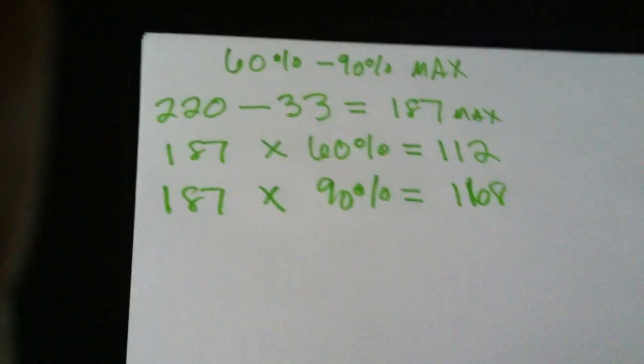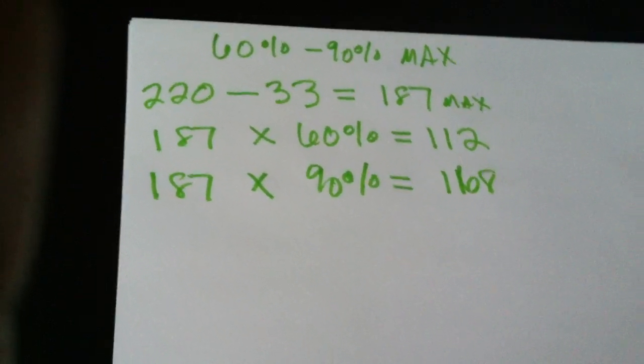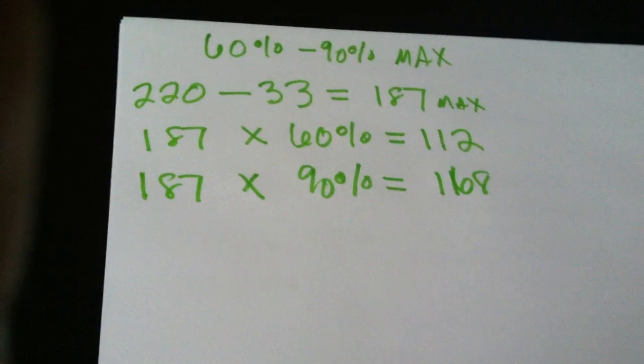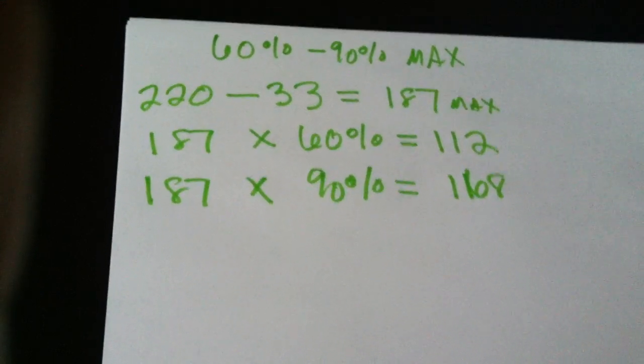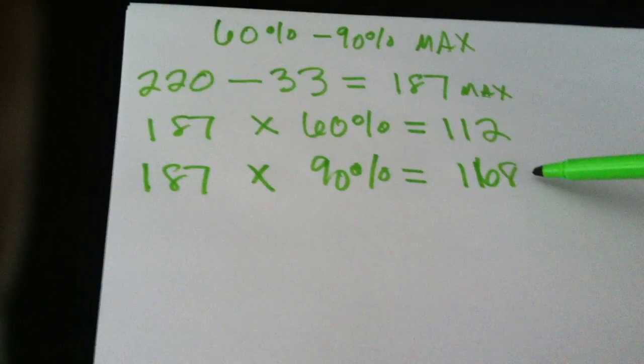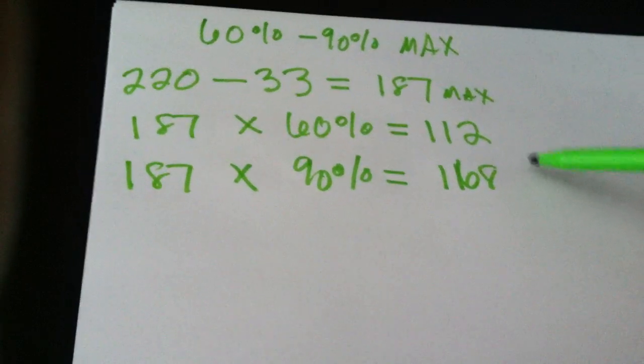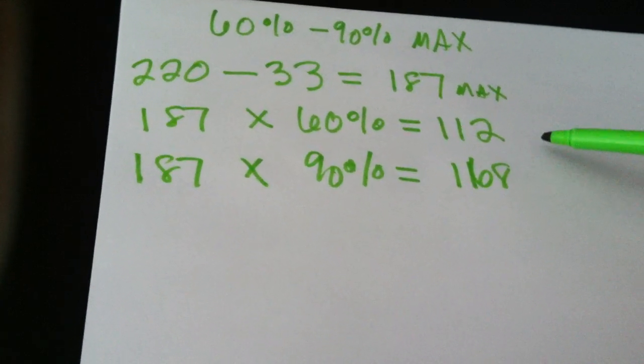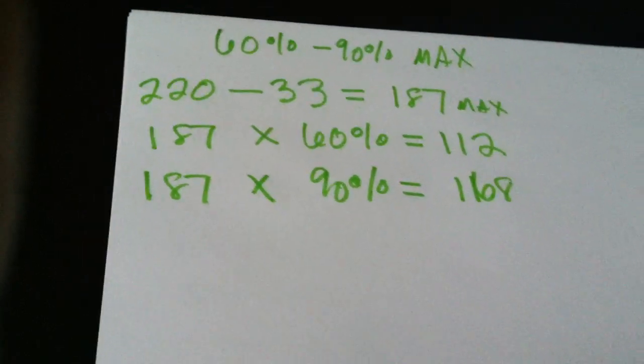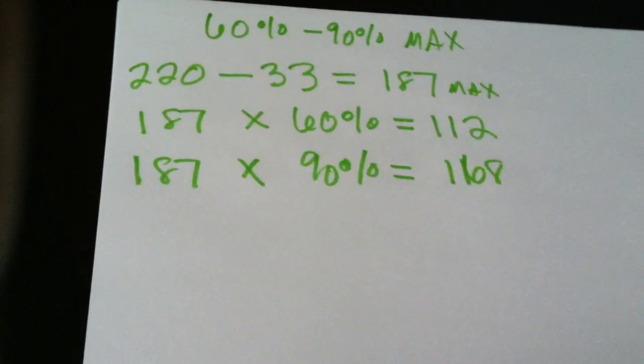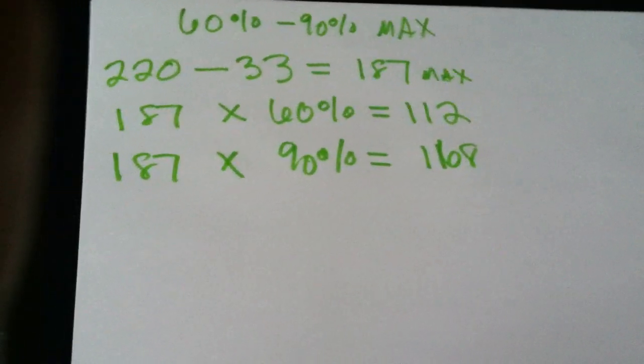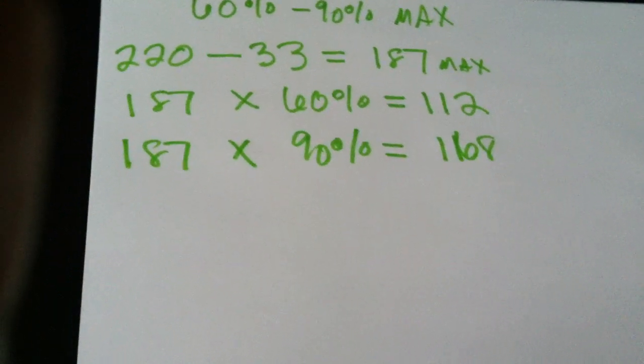So when I do my P90X plyometrics workout, or I do my insanity workouts, I am usually really close to this 168, if not right at it for a lot of the workout. So I'm usually right at towards the top end of my range. So that just means I'm really working hard, getting my heart rate up.